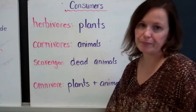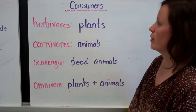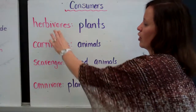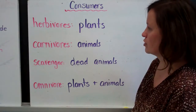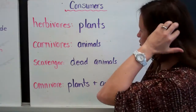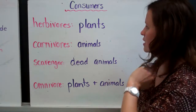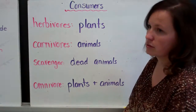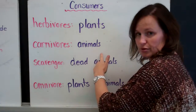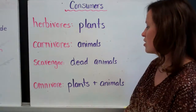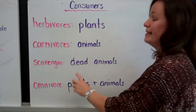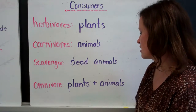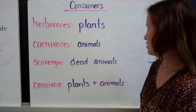A consumer is an organism that eats another organism. There are different categories of consumers. Herbivores are organisms that eat only plants. Carnivores are organisms that eat only animals. Scavengers are animals that eat only dead animals. And omnivores are organisms that eat plants and animals.